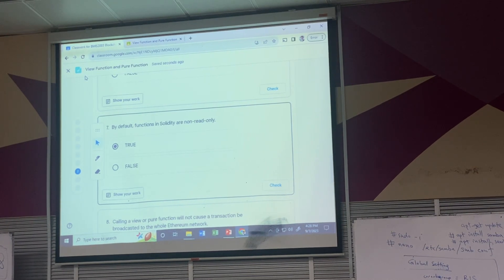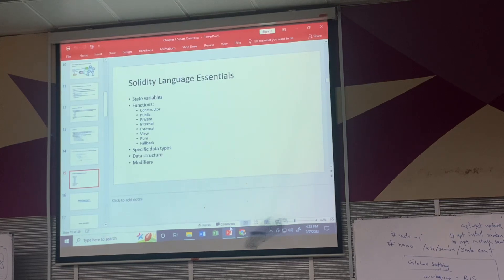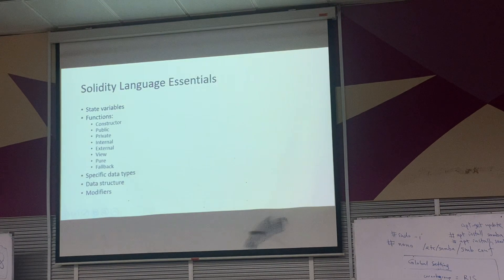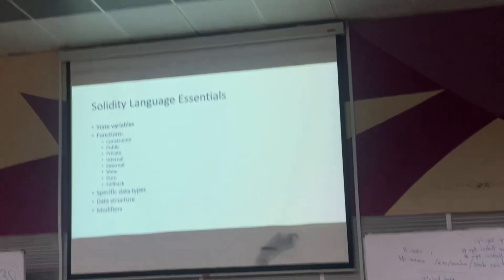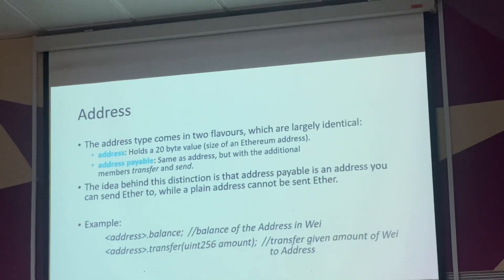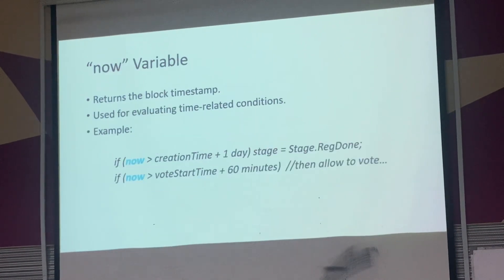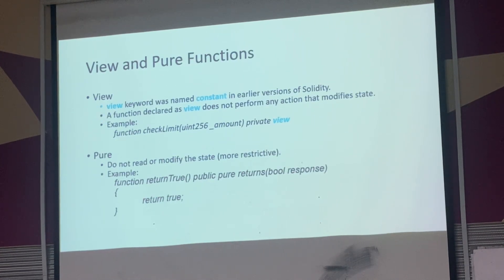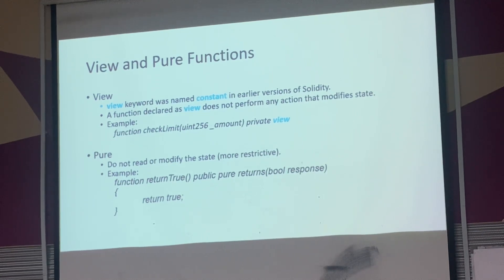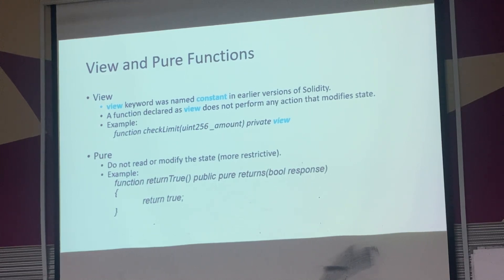Hopefully with this small exercise you can better understand view and pure functions. That's why it's very important when writing a smart contract to identify whether your function is doing reading only or writing, so you can put the right keyword. Today the objective is very simple - I want to finish this chapter. We've discussed view and pure keywords in detail and I believe you all know how to use them now.